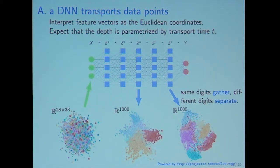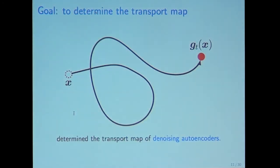In this neural network, on the left side, as an input layer, every digit is mixed. But in the last hidden layer, every digit has to be separated, because the output layer is usually a linear classifier. So, what I have to do is to determine the transport map. Which transport map is approximated by neural network? This is my research question.